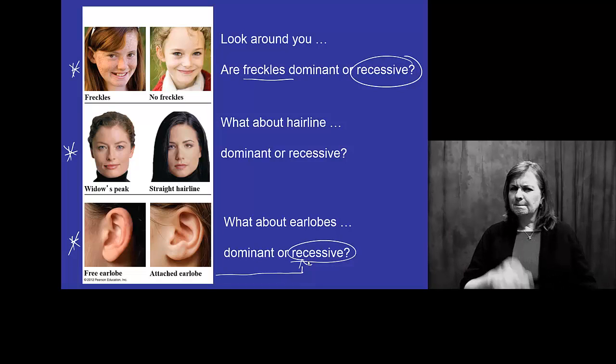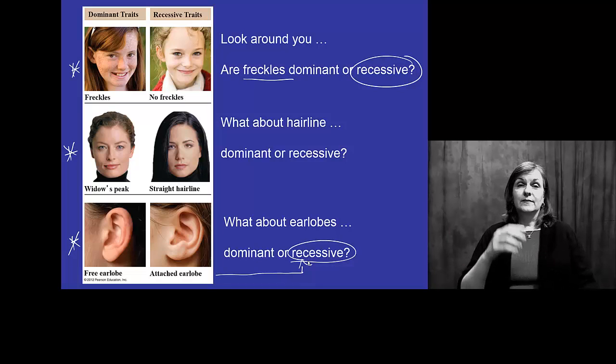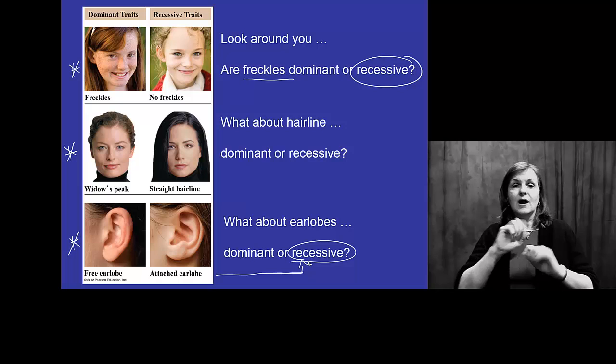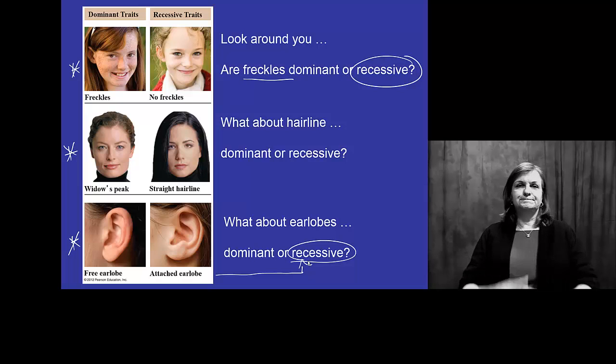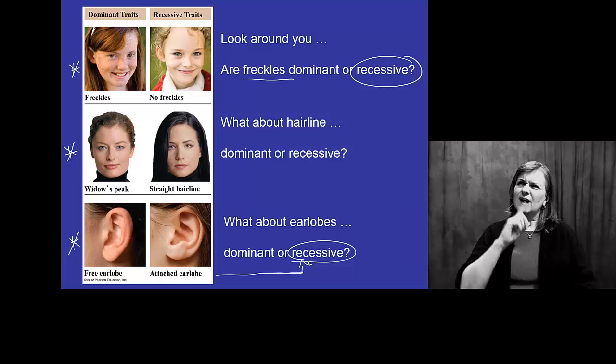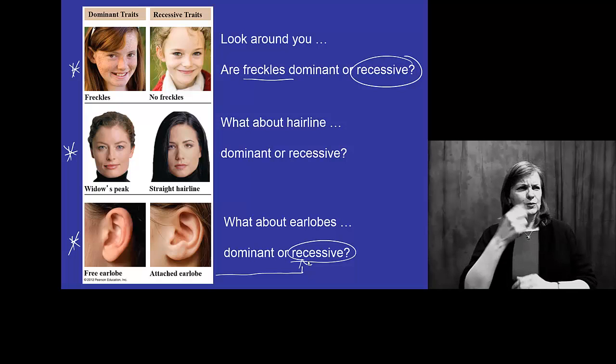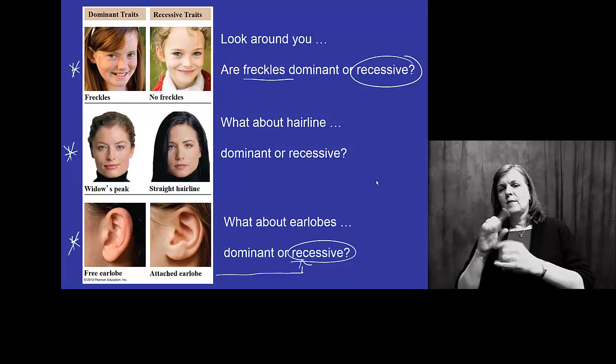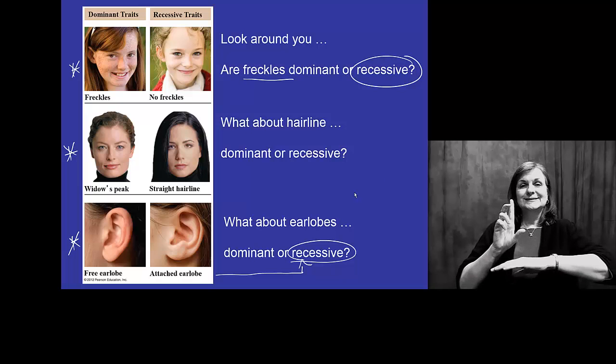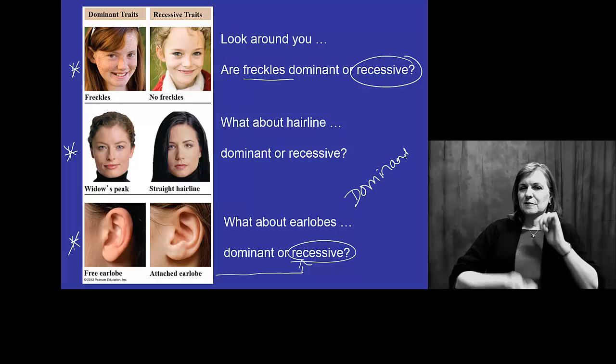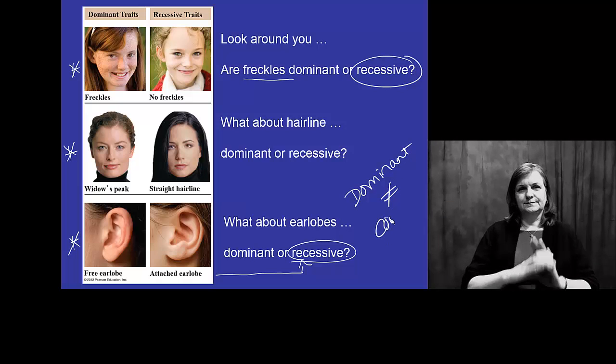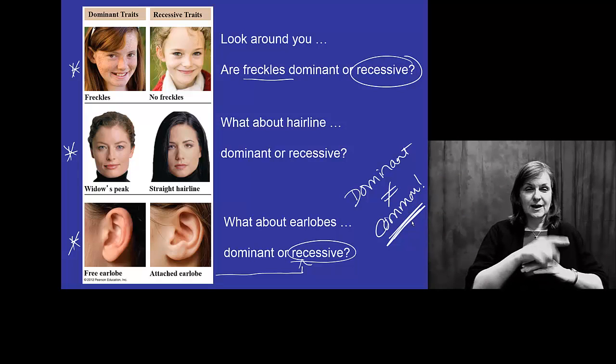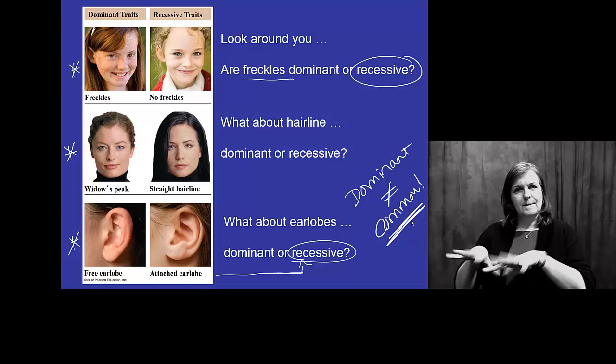Well, how does this actually work out? Freckles, widow's peak, and unattached ear lobes or free ear lobes are all dominant. If freckles are dominant, why don't we see them more often? This is our first indication, and we'll talk about it a lot. Dominant does not equal common. Just because a trait is dominant genetically does not mean it is common in a population.